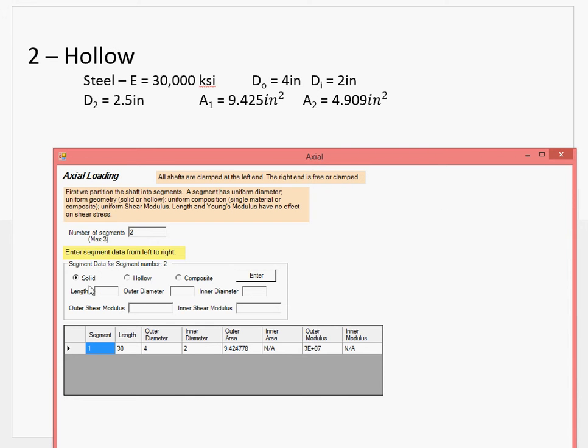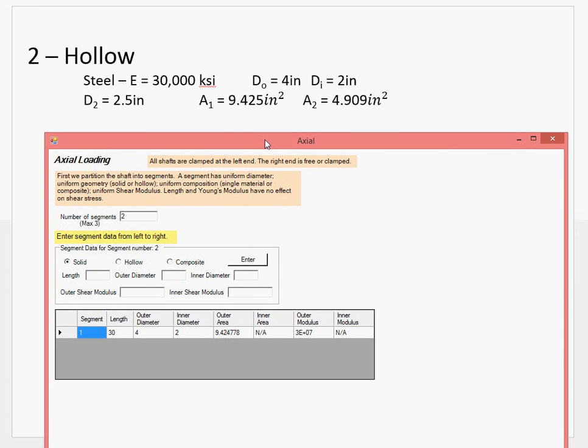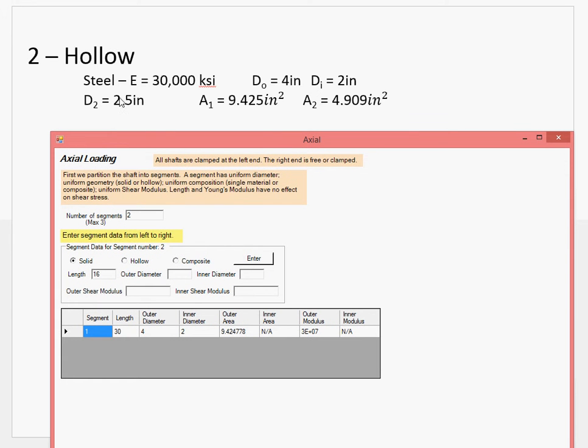And on segment 2, now this one's solid. Its length is only 16 inches. Diameter, 2.5. Your modulus is the same. And because it's solid, we can ignore these two inner things. We also solved for its area.